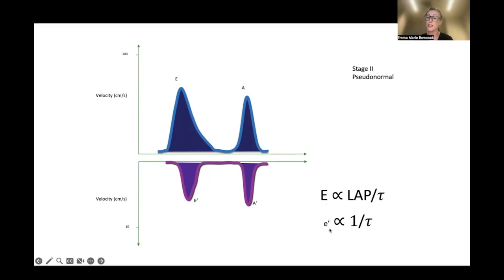E-prime is inversely proportional to tau as well, so if you put the ratio of LAP over that, you can work out whether your pathology is because of raised left atrial pressure or because you've just got someone with a high E-wave because they've got a really good ventricle that's relaxing. That's why it's important to look at your E-wave as well as your E-prime.